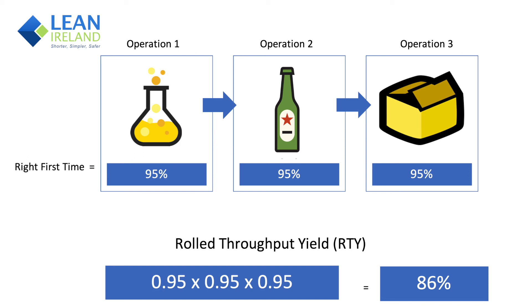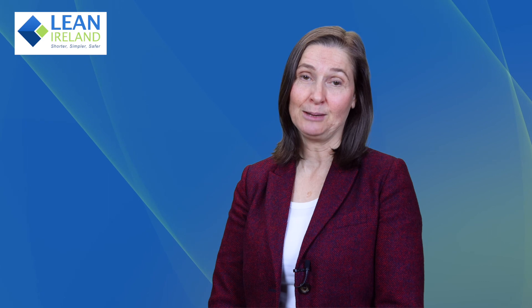I would encourage all of you who are measuring yield to adopt rolled throughput yield. It's a much better measurement of true process performance. If you have any questions on how to measure process performance, please be sure to contact us. We are here to help. Thank you for watching.